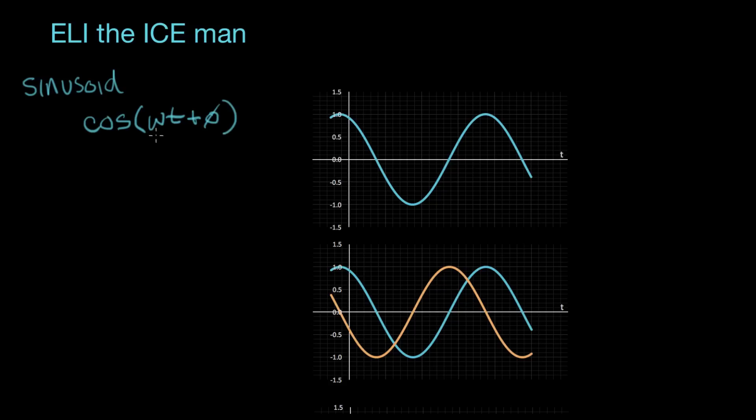We say cosine of omega t plus phi. Omega represents the radian frequency of the cosine. Here it's shown in blue. That radian frequency is omega. And phi is the phase delay, or the phase shift. And if we look here, we see this isn't really a cosine wave, because the peak is a little before zero, time equals zero.